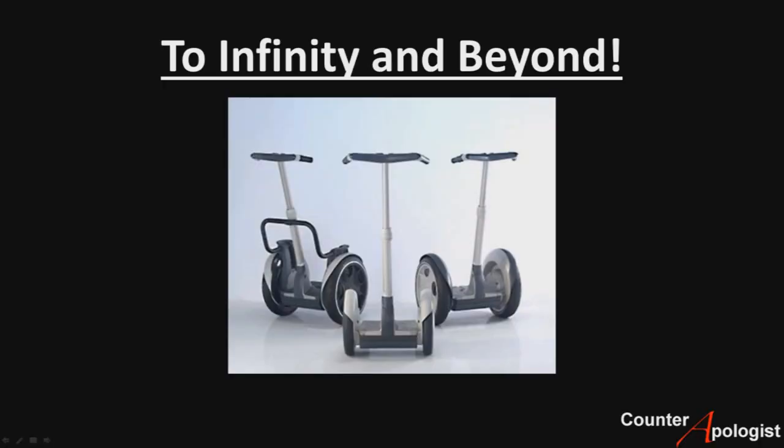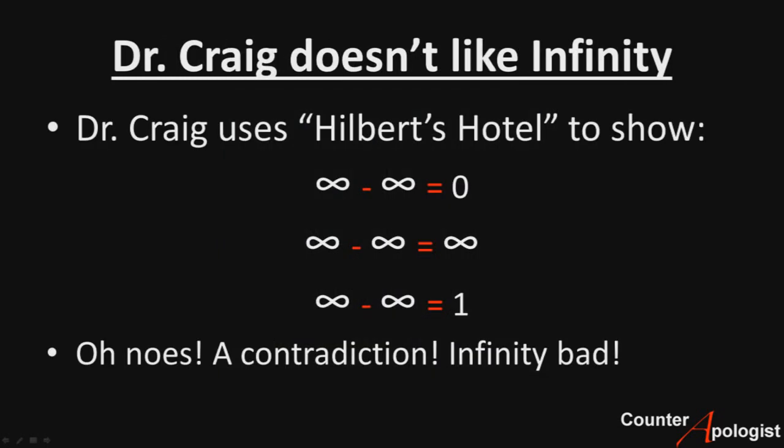Craig starts off his argument with an assertion that an actual infinity can't exist in the real world. His actual syllogism isn't really important — it all comes down to this crucial premise and how he justifies it. He likes to prove this by going through thought experiments like Hilbert's Hotel, and through this he shows that if an actual infinity exists in the real world it leads to absurdities. This is largely because he's going to subtract different values from infinity, sometimes using infinite subsets of infinite numbers, and come up with the same or contradictory answers.